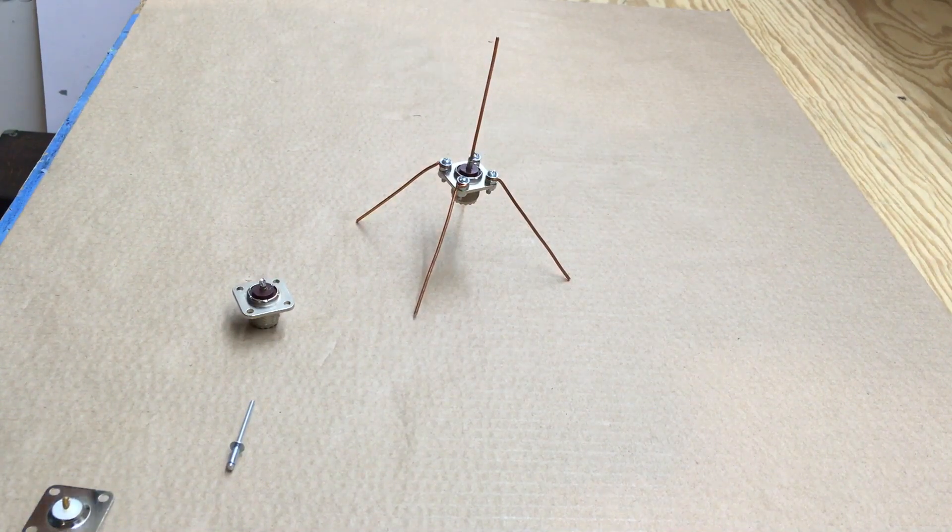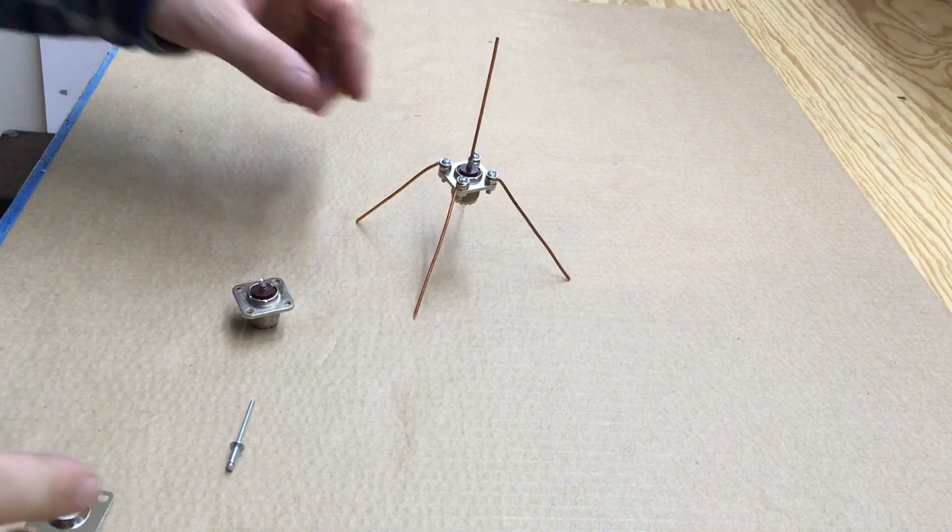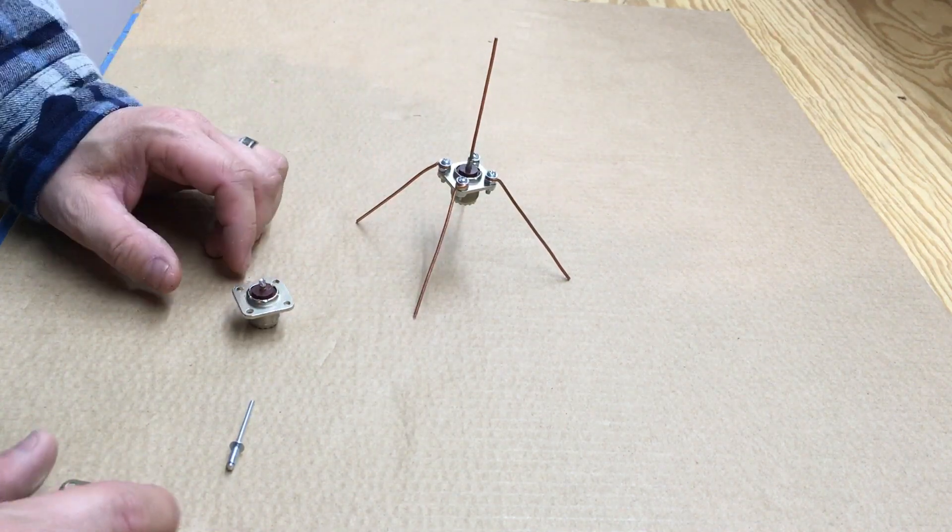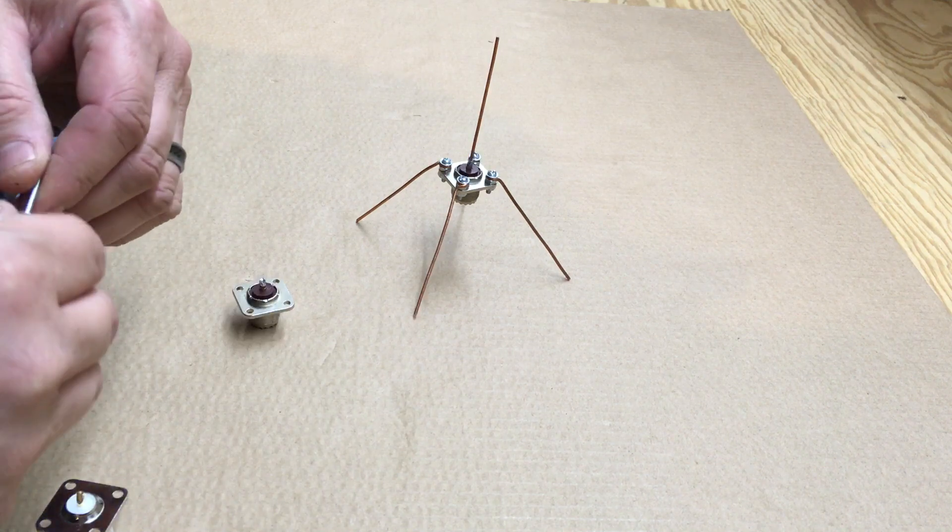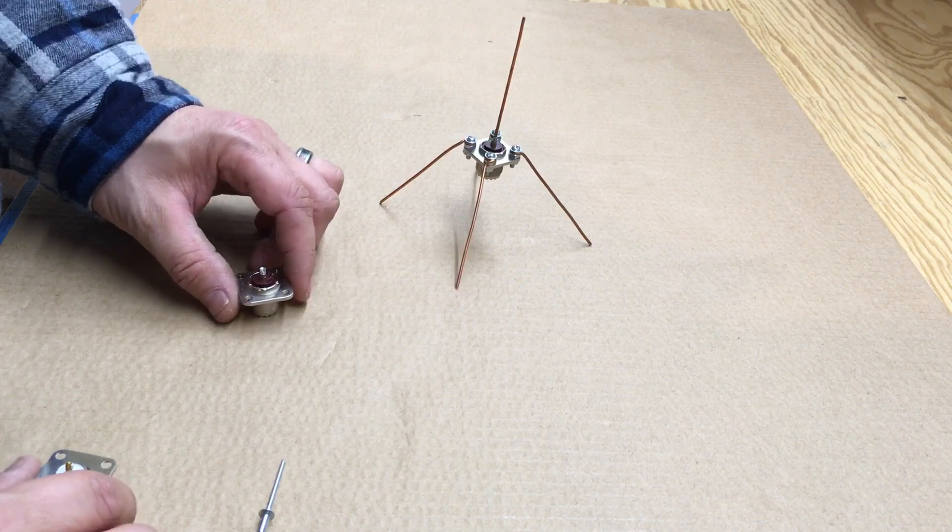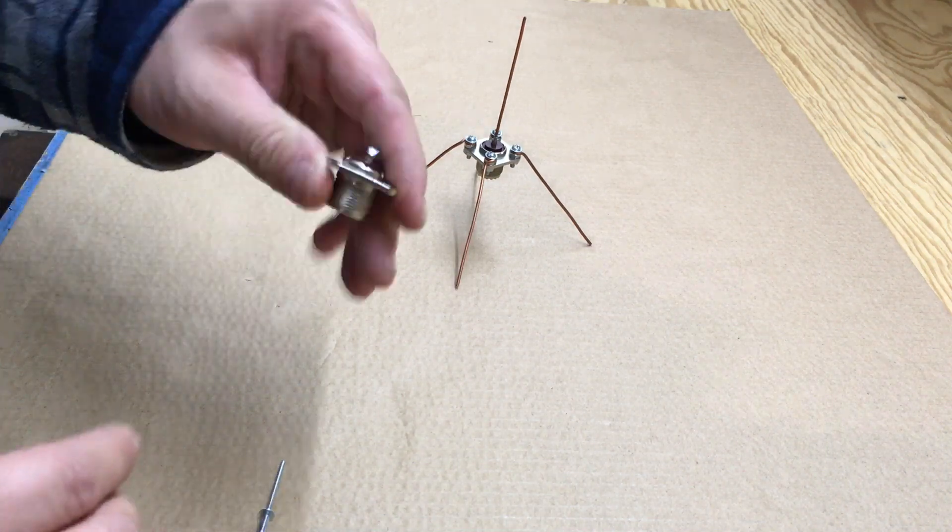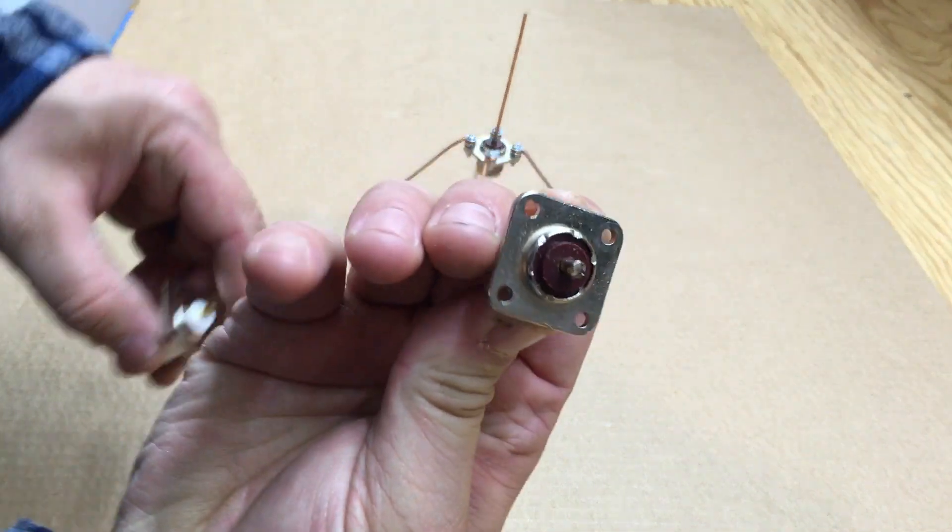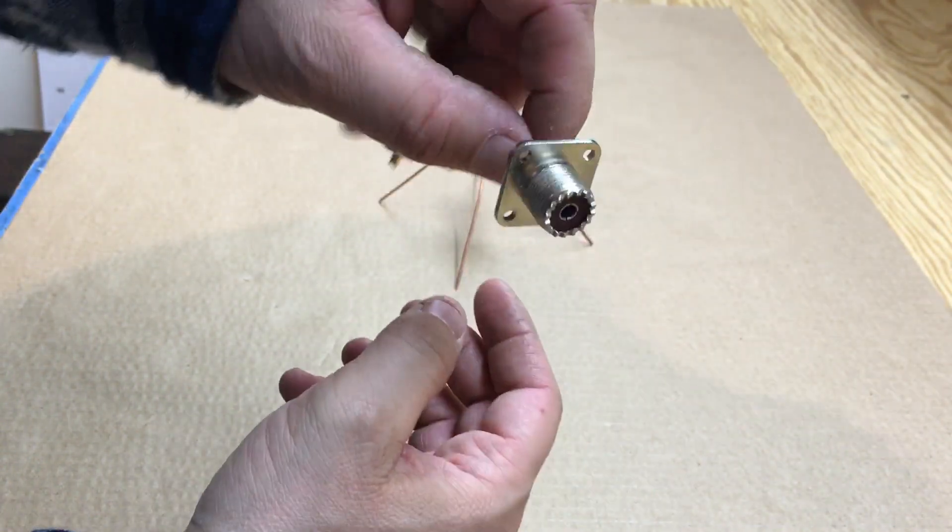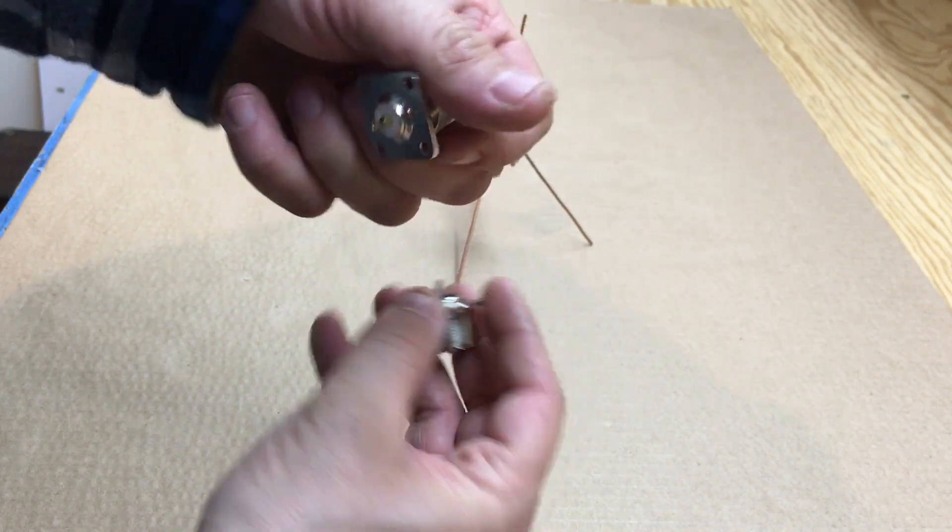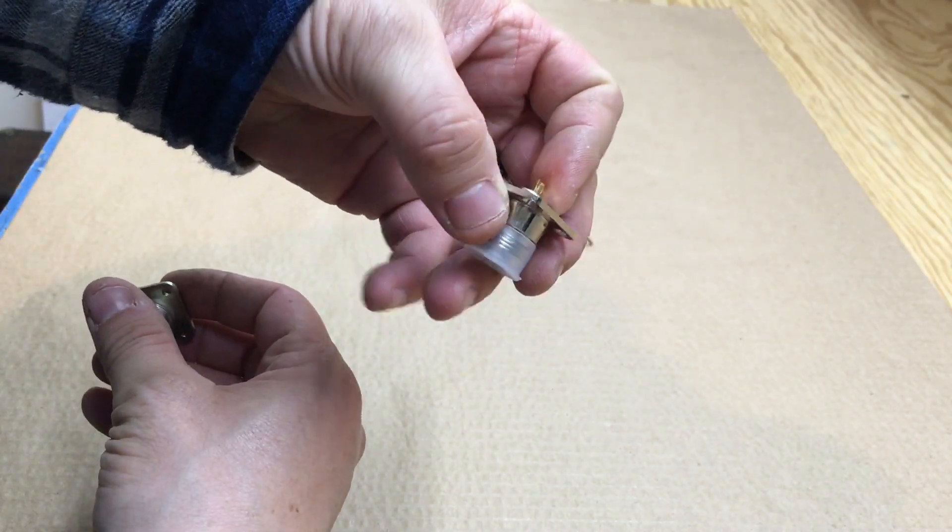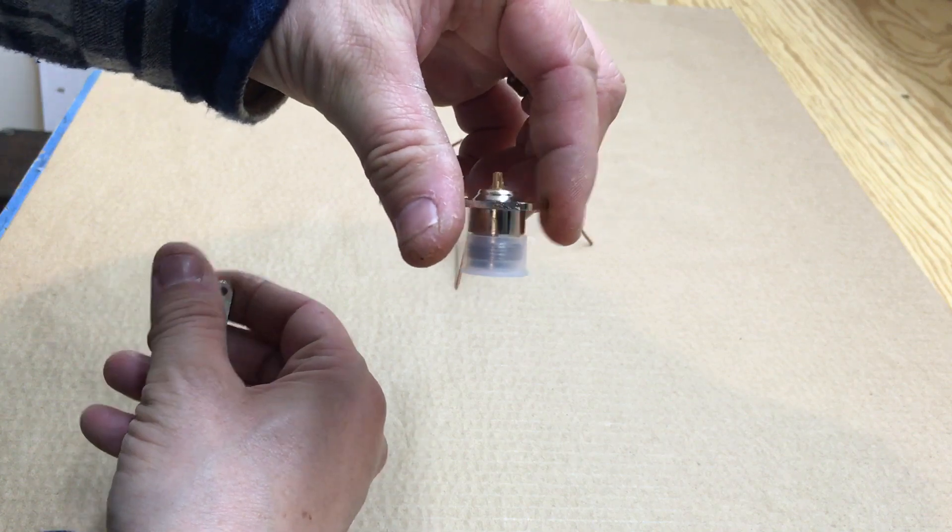All right, FuzzPiGuy here. Just want to show you a simple antenna for ADS-B for 1090 megahertz. It's a pretty simple antenna to make. You can just use one of these connectors. I would prefer the N connector since they're better for higher frequencies.